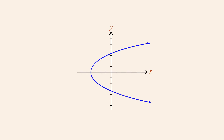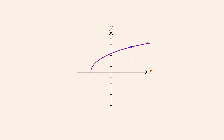This curve fails the vertical line test and therefore does not represent a function. Curves like this which are not functions are still binary relations, since binary relations can have any number of y-values associated with any given value of x. However, if we eliminate parts of the relation which cause it to fail the test, then its graph can represent a function.